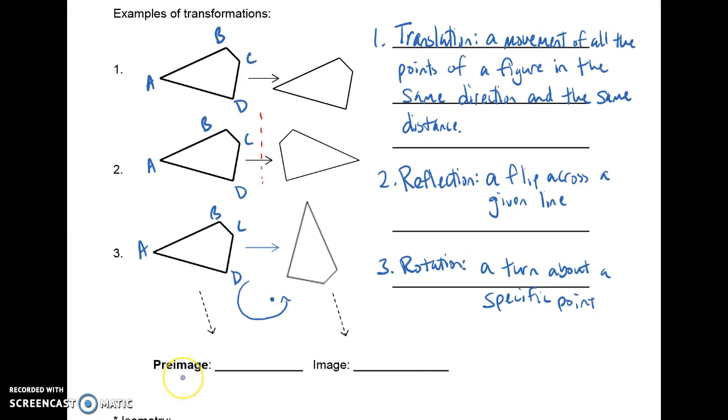And then we have some vocabulary below. So we have what's called a preimage and an image. So we want to be very careful with the way we talk about the before and the after. So the preimage is the original shape or the original figure, or I like to think about it as the before. And the image is the after or what happens after the transformation. So it's the resulting figure.